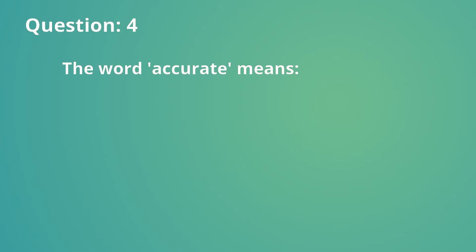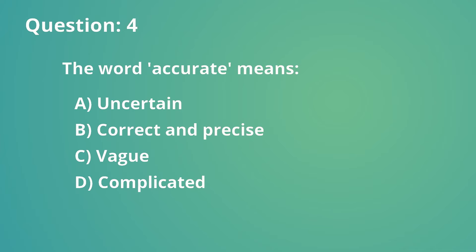Question number 4. The word accurate means: a. Uncertain, b. Correct and precise, c. Vague, d. Complicated.